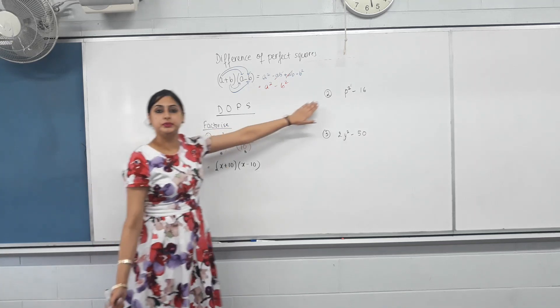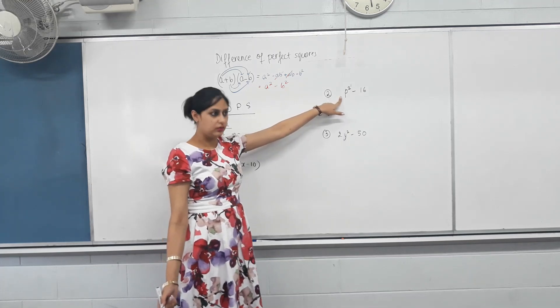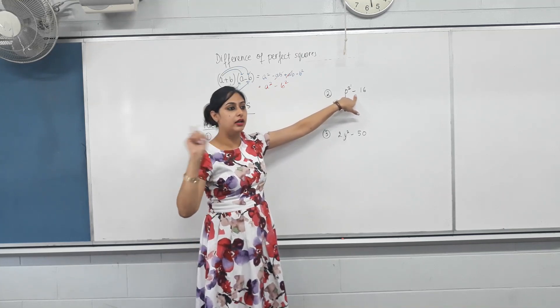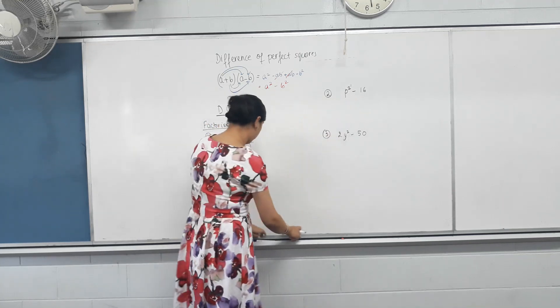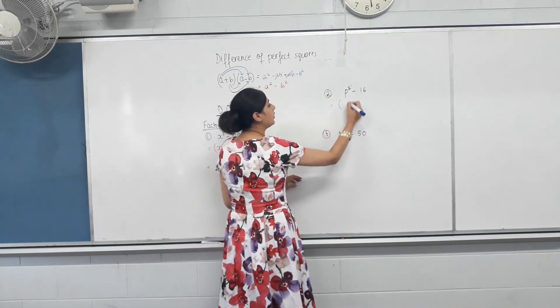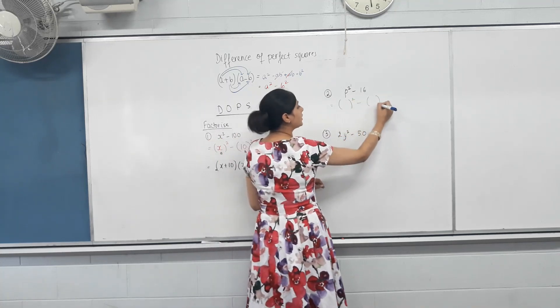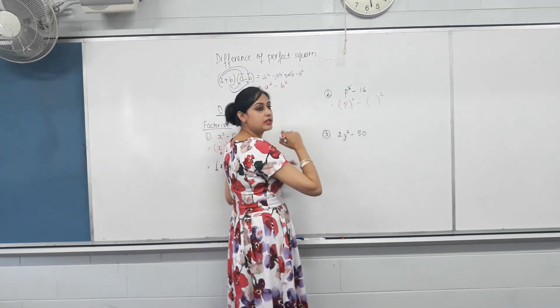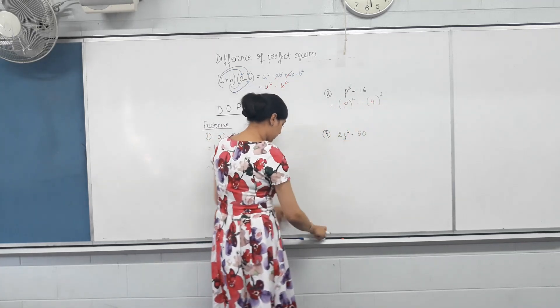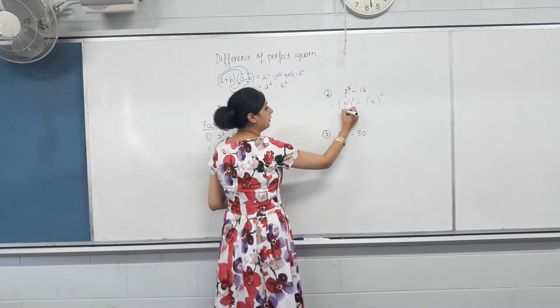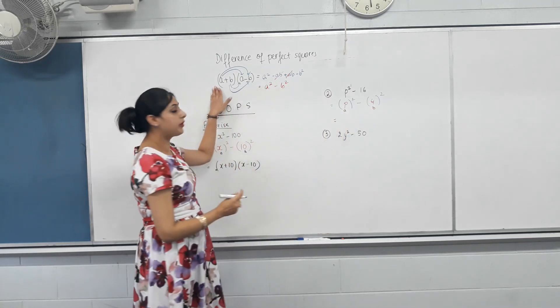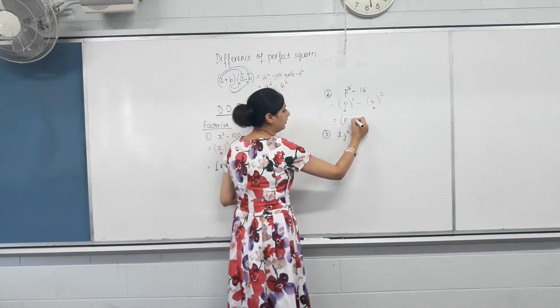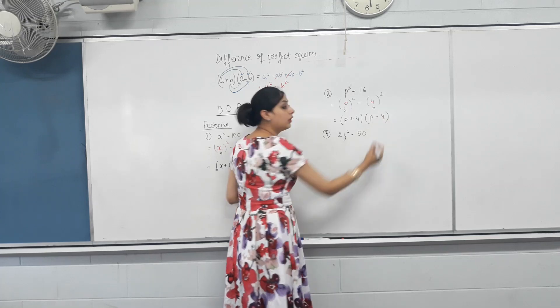This one. Perfect square? Yes. Perfect square? Yes. Minus sign? Yes. What does the bell say? DOPS. So, something squared minus something else squared? Yes. A squared, even and four. So, B squared. B? A. 16 is? Four. What is that A? A. What's the B? A. A. So, what does the bracket say? A plus B, A minus B. So, it'll be? A plus four. A minus four.